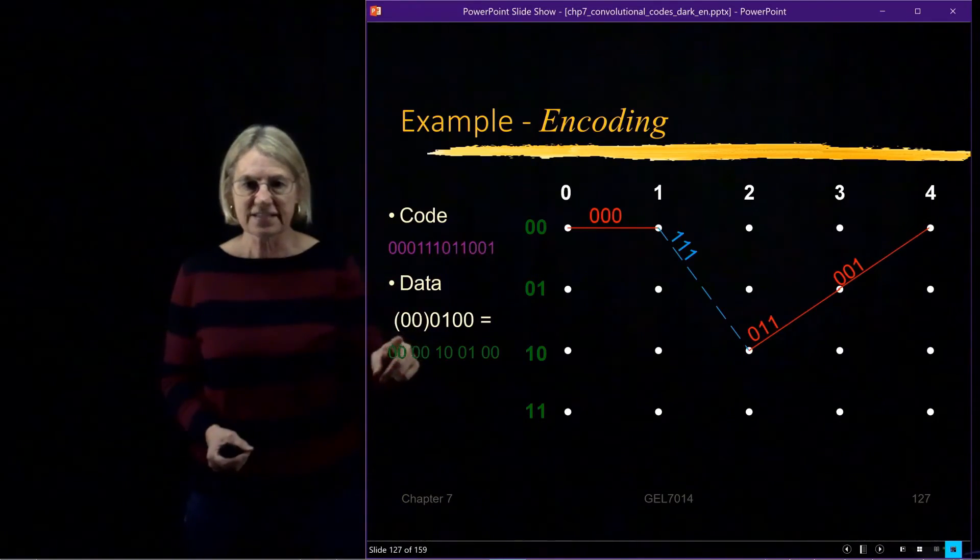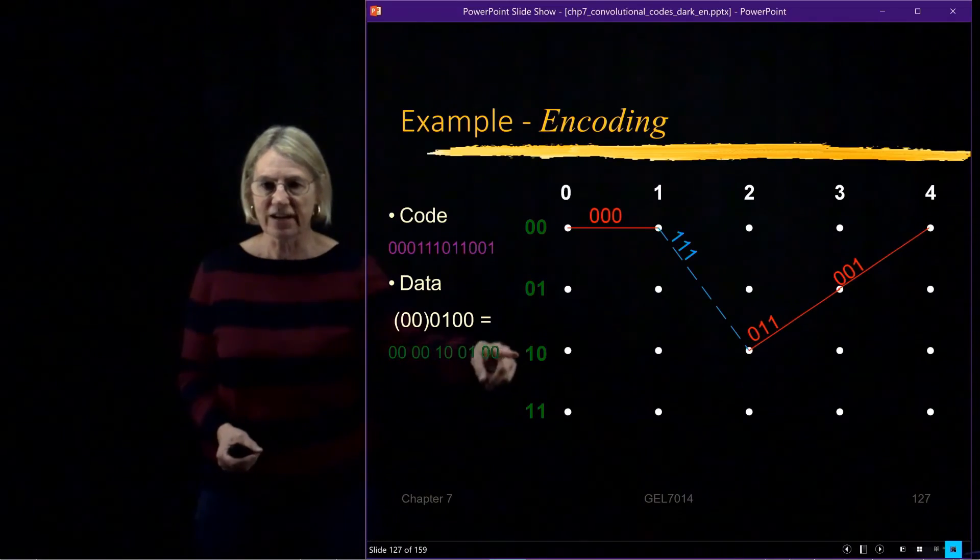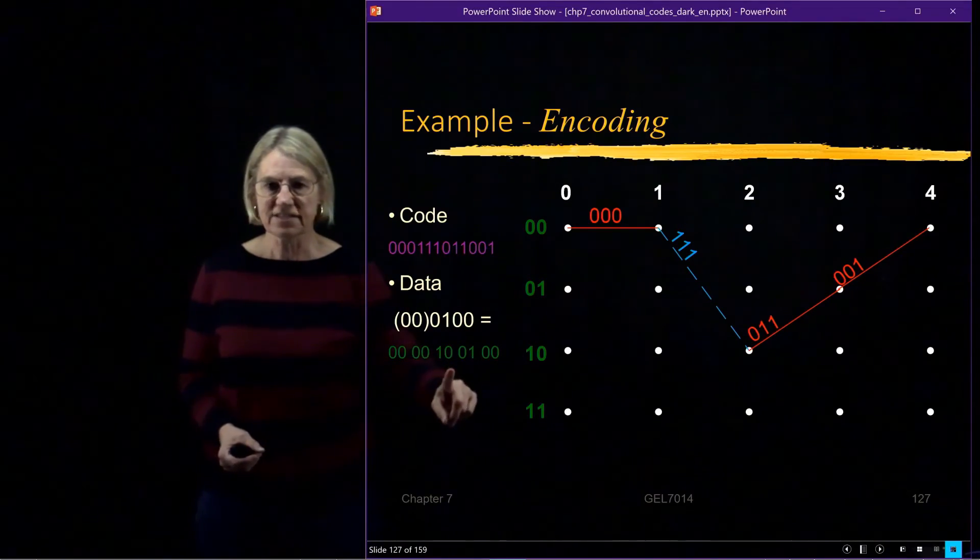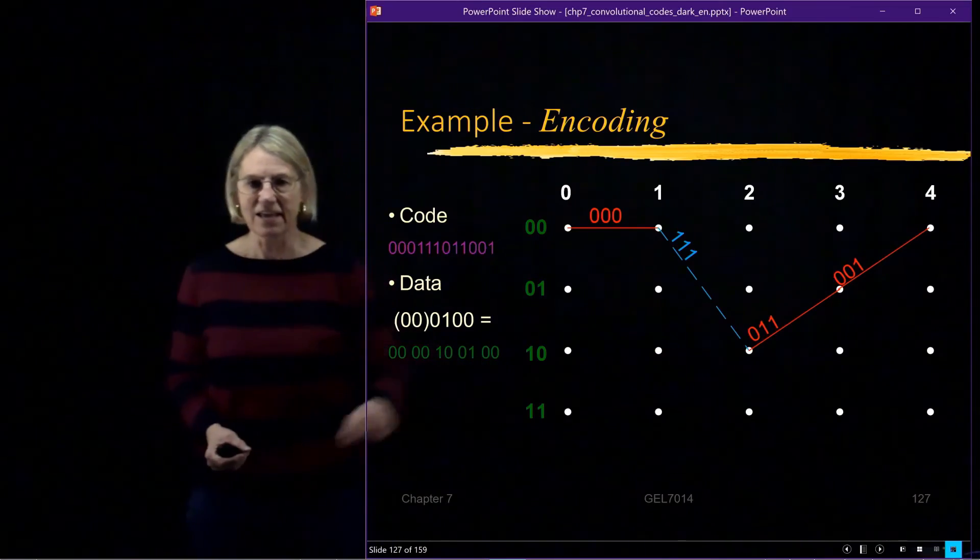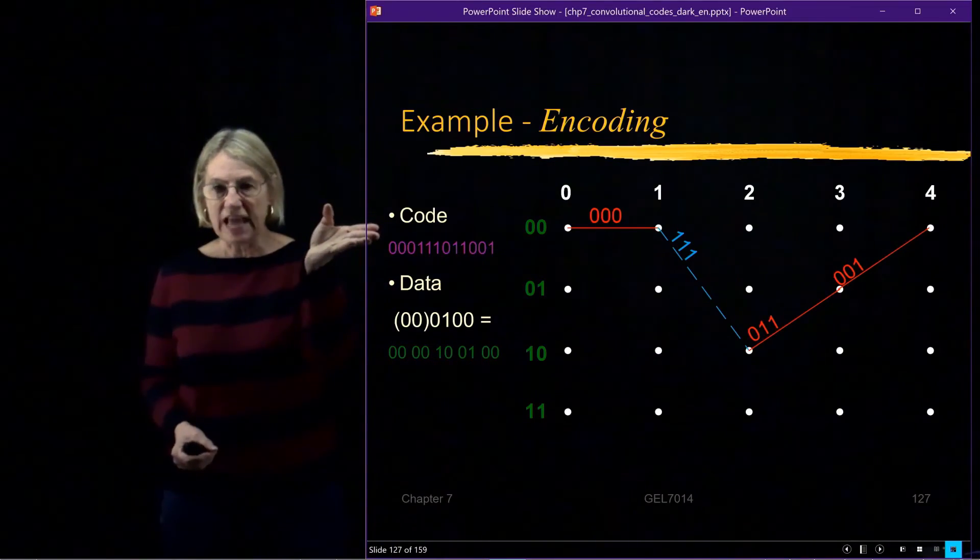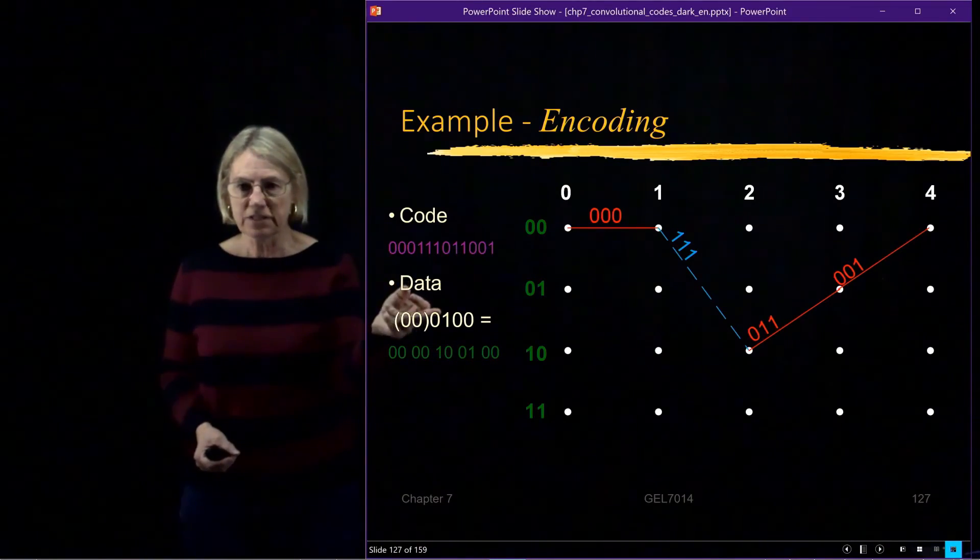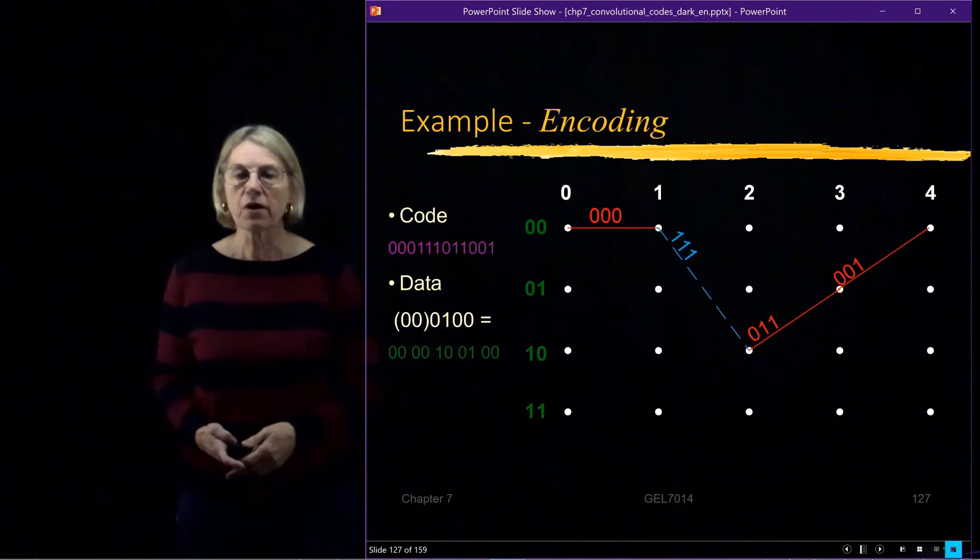And if I wanted to look at the states, how the states were changing, I was at A, then at A, then down to C, up to B, back to A. So we have a representation of the output of the encoder, the input to the encoder, and the states of the encoder during this process. So this is one example for encoding.